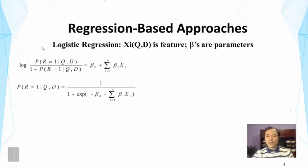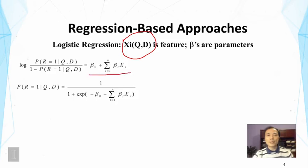Here I use xi to denote the feature, so xi of Q and D is a feature. We can have as many features as we would like, and we assume that these features can be combined in a linear manner. Each feature is controlled by a parameter beta — that's a weighting parameter. A larger value means the feature has a higher weight and contributes more to the scoring function.